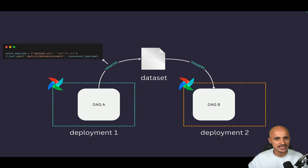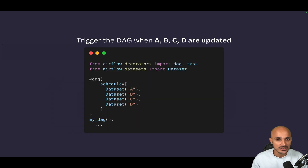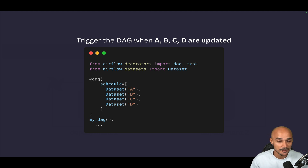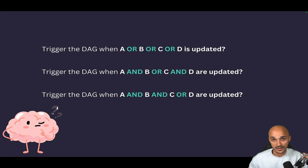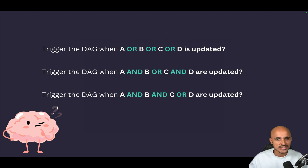Speaking of datasets, so far they were pretty limited. You had two options to trigger a DAG based on datasets: waiting for one dataset, or waiting for multiple datasets — but if you wait for multiple datasets, you have to wait for all of them to be updated. Until 2.9, there was no way to implement more complex logic, and you had no way to do that.